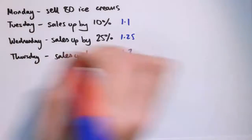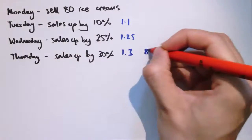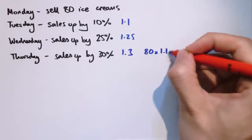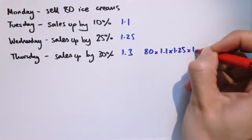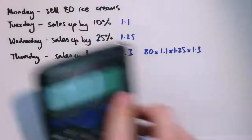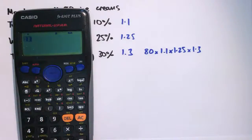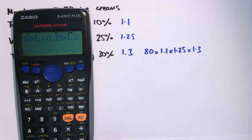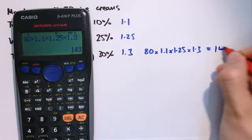So if I want to work out the number of ice creams I sell on Thursday, I would just have to do 80 times 1.1 times 1.25 times 1.3. So we could put that into the calculator, and that would give us 143.